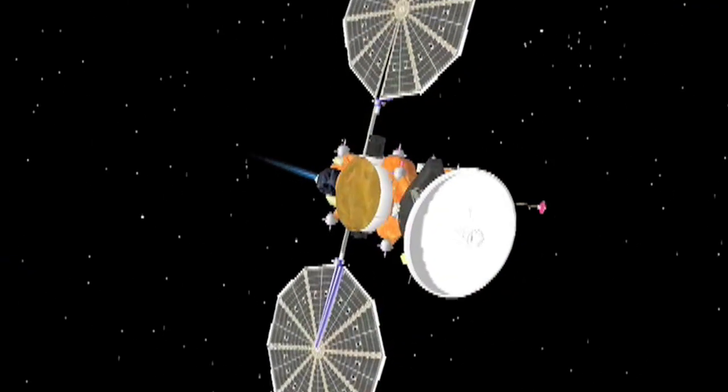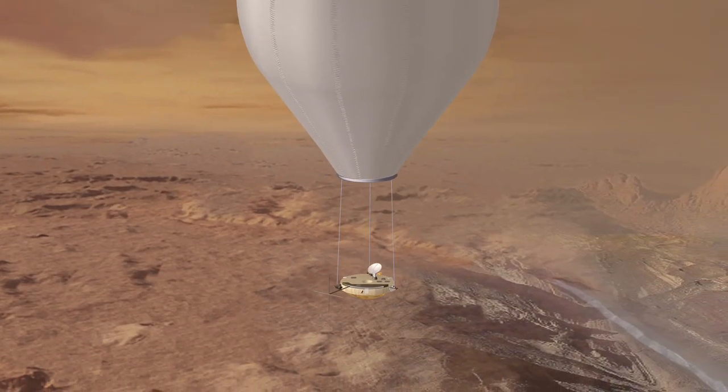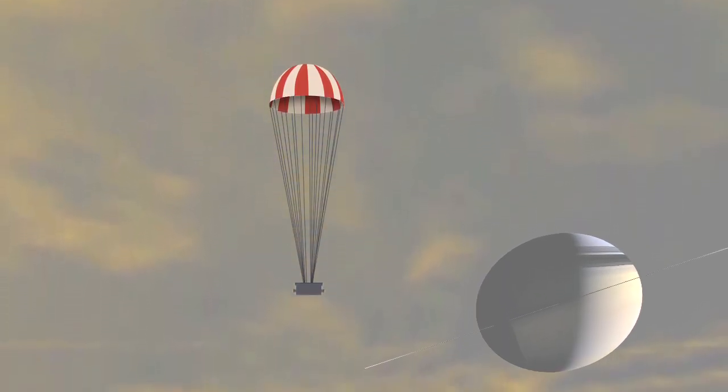The Titan Saturn System mission is a three-in-one mission with an orbiter for Titan, a balloon that will float through Titan's atmosphere, and a lander that will splash down on one of the northern lakes of Titan.